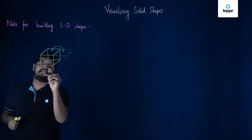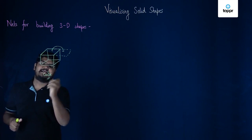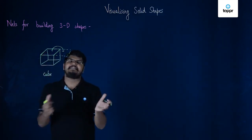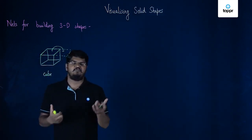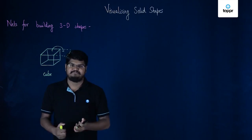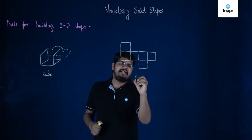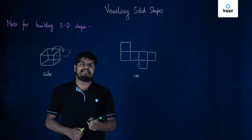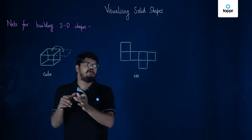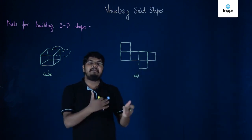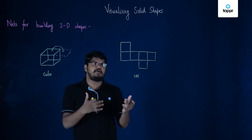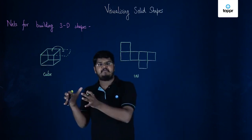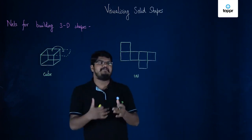Let us now see a net diagram and determine whether that particular net diagram is a net diagram of a cube or not. Here you can see that I have a net diagram and now using this net diagram I'll try to form a cube. If we are able to form a cube completely, then this net diagram is a net diagram of a cube; otherwise it is not.